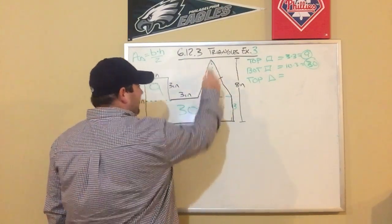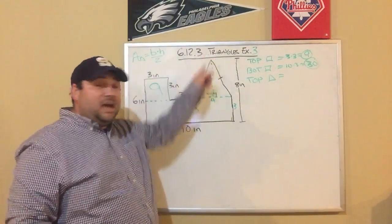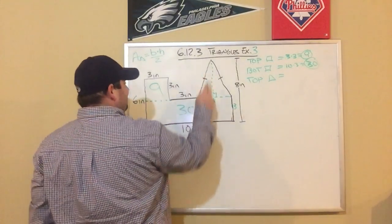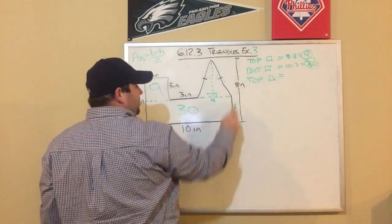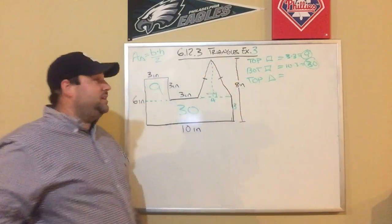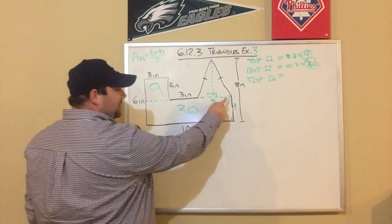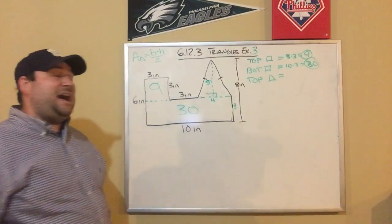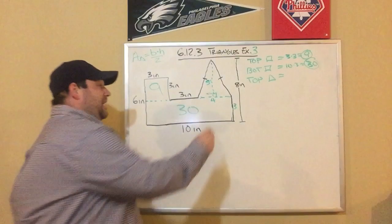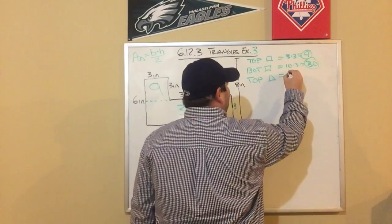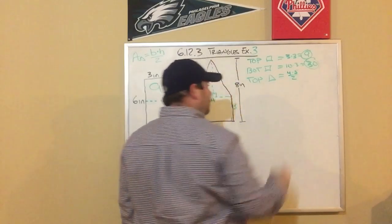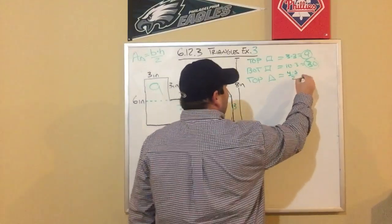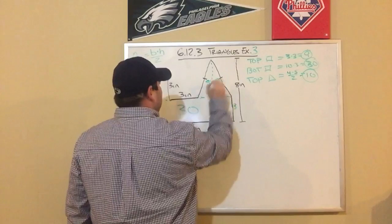I'm going to draw a magical line right here for the height — I can see that's a right angle because I drew it straight down. The total height from the top of the triangle to the bottom of the figure is 8, which was given, and I already know this side is 3, so 8 minus 3 tells me the triangle's height is 5. Now I have base 4 and height 5: 4 times 5 divided by 2 — remember, area of a triangle is base times height divided by 2 — so 4 times 5 is 20, divided by 2 is 10.